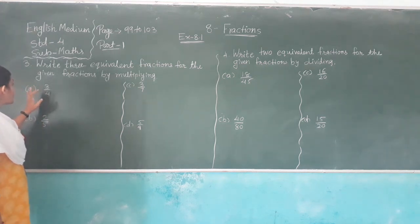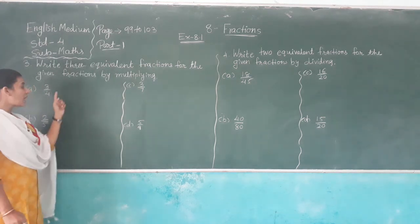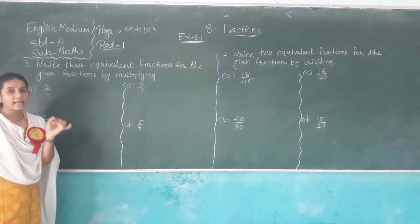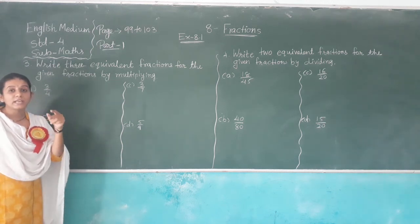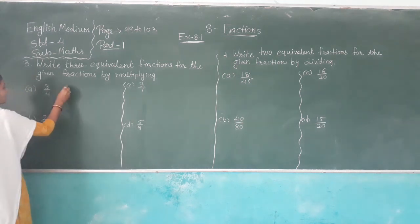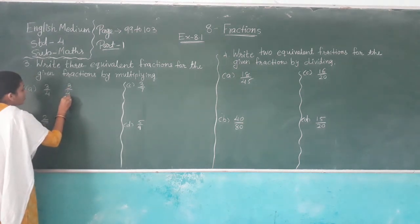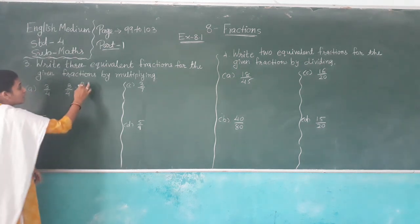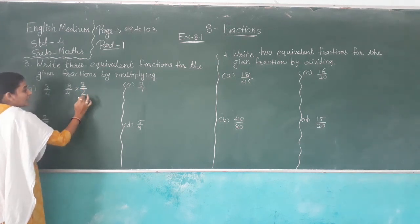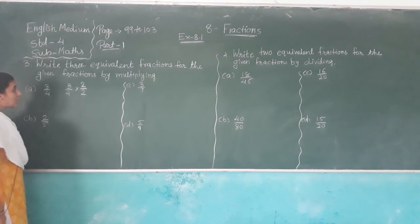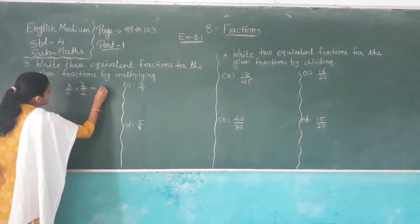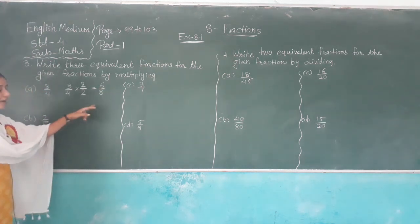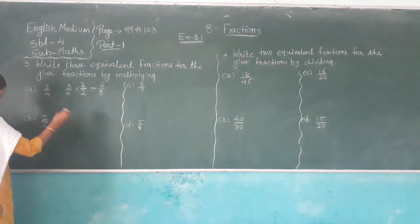Here, three out of four. You multiply three out of four — multiply both the numerator and denominator by the same digit. First, three fourths multiplied by two over two: three times two is six, and four times two is eight. So six out of eight is an equivalent fraction of three out of four.